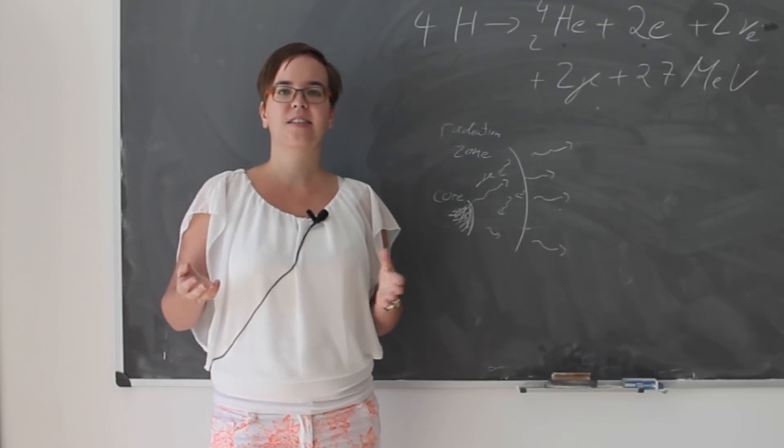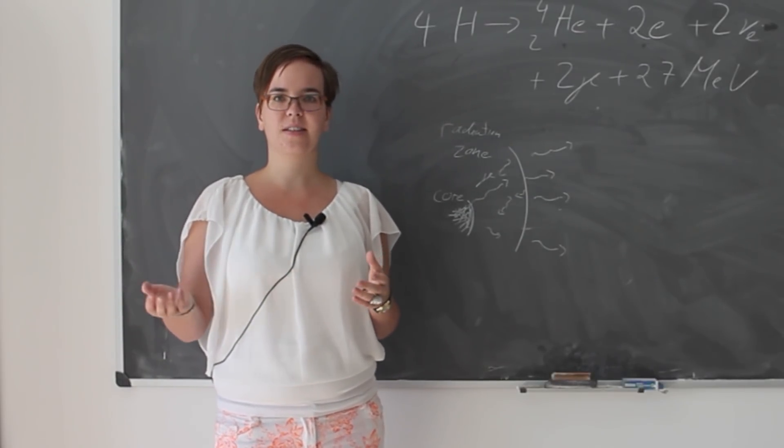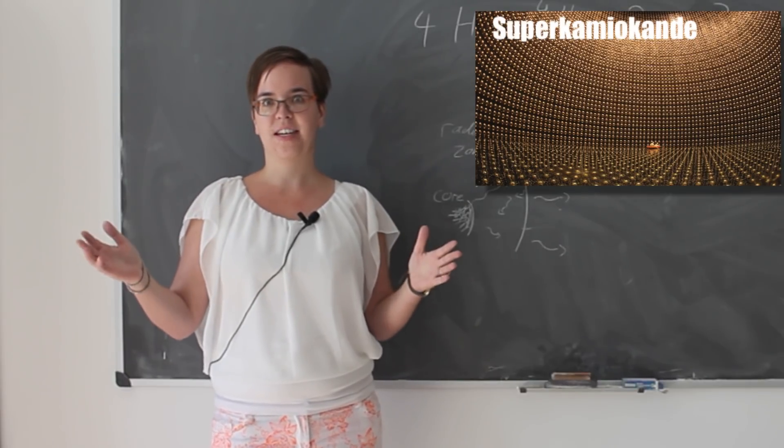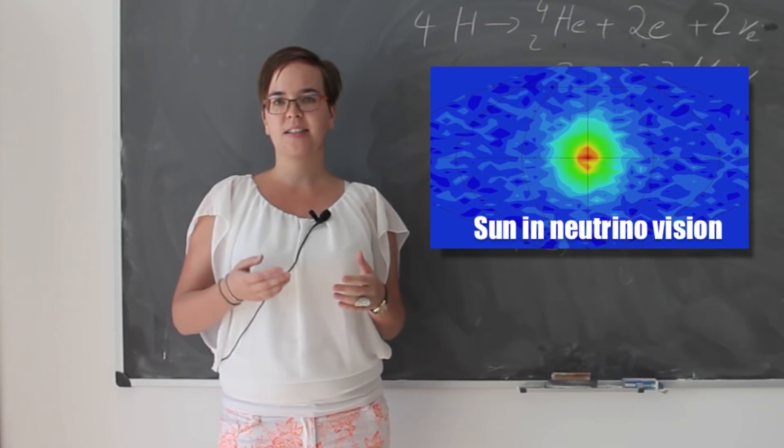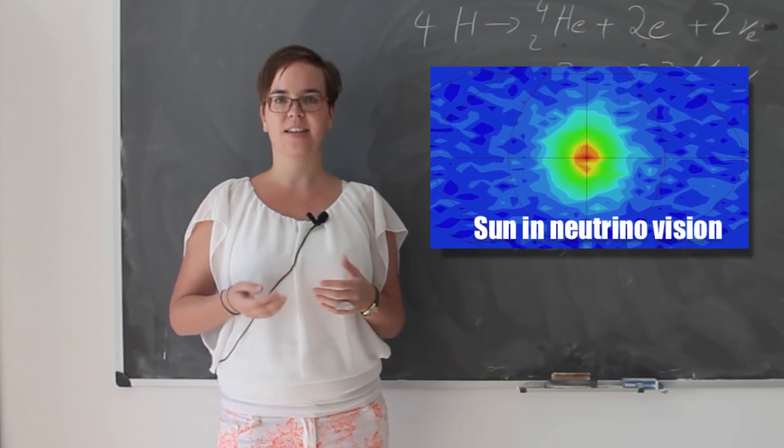We can make use of the fact that neutrinos escape the Sun so easily by detecting them in huge neutrino detectors at the Earth. In this way, we can get some insights of the processes which happen in the center of the Sun.